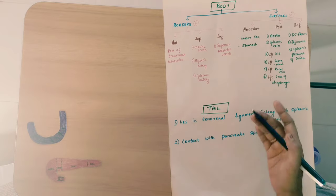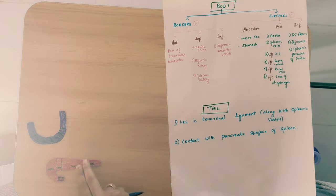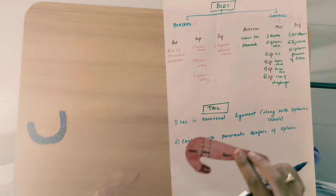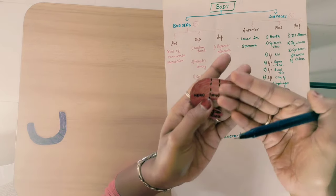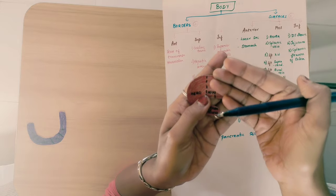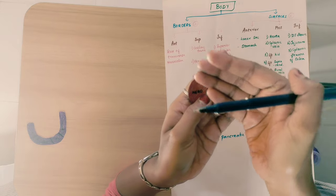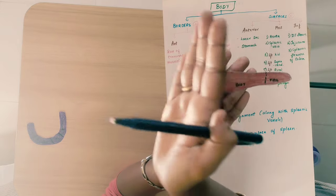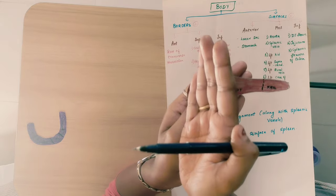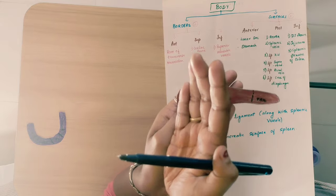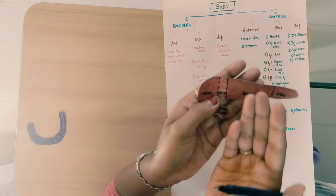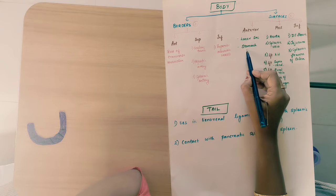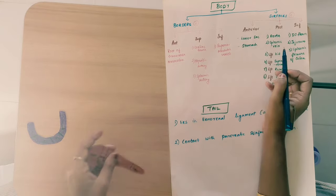Coming to the surfaces: the anterior surface is related to the stomach and the lesser sac of the peritoneum.